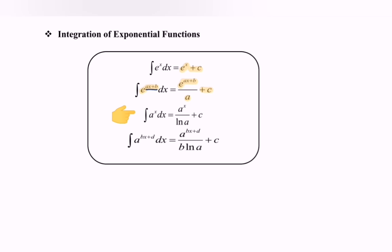Next, another type of exponential function: integrate a to the power of x with respect to x. We have a to the power of x — kindly focus on the power where we have x. Differentiate the situation and we will have 1, meaning we divide by 1, then remember to add on ln(a) plus c.